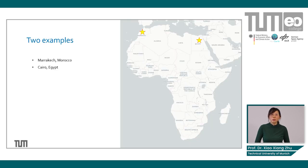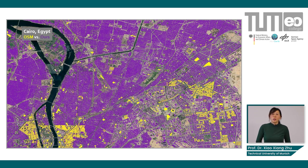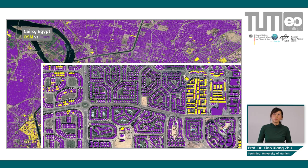To show two examples in Africa — these are capital cities of Morocco and Egypt, where we have the richest information on the continent. Here is a zoom into Cairo: in yellow you see today's OpenStreetMap data, and in purple is what we generated as the global building footprint. Even in a capital city, OpenStreetMap data is very incomplete, and all the purple areas represent the information gap we are closing with AI and EO.